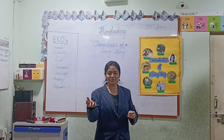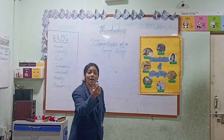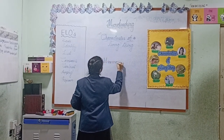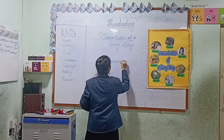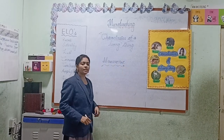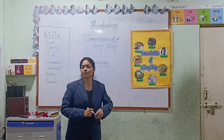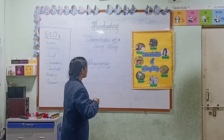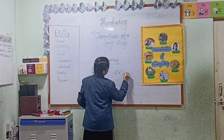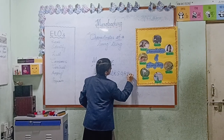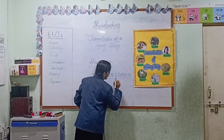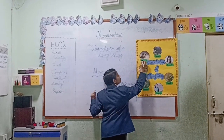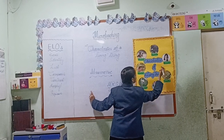These are our seven characteristics — how can you remember them? Students might feel overwhelmed, right? So for this, I will share one small technique. This is a small technique which helps us remember. For example: M, R, S, G, R, E, N — Mrs. Grant. In this name, each letter helps us remember the first letter of each characteristic of a living thing.